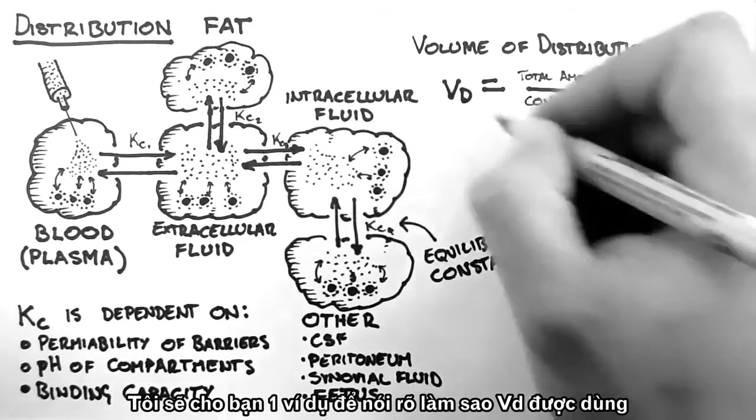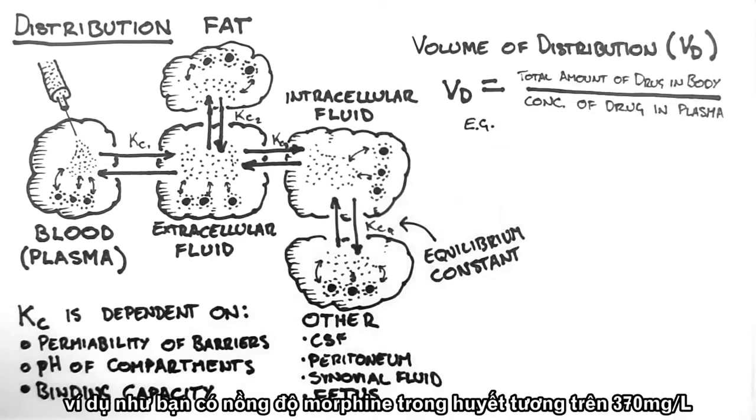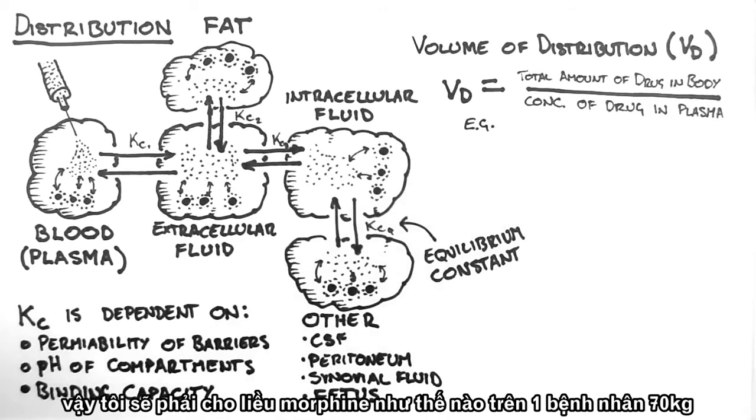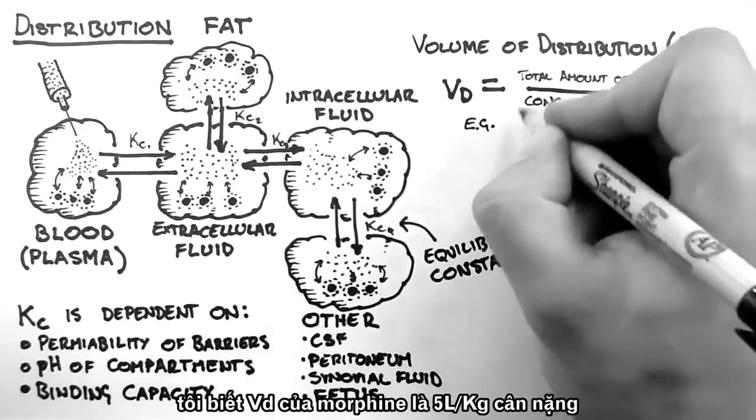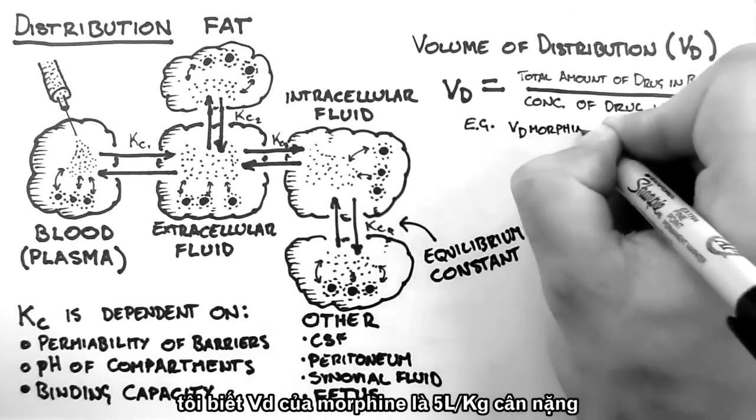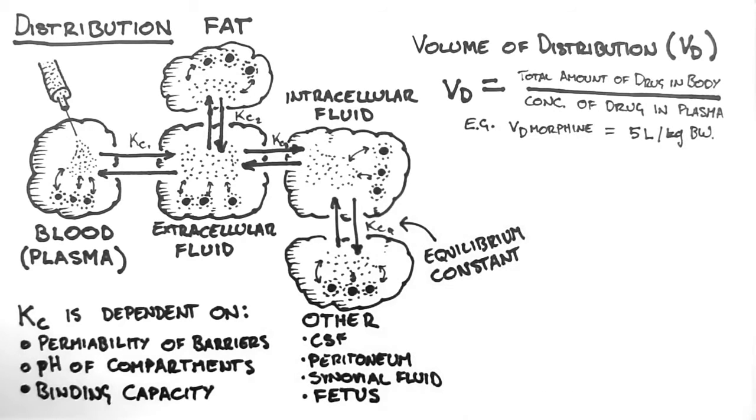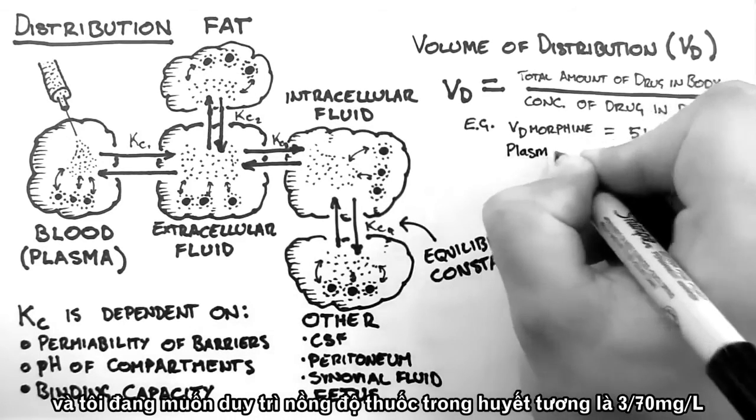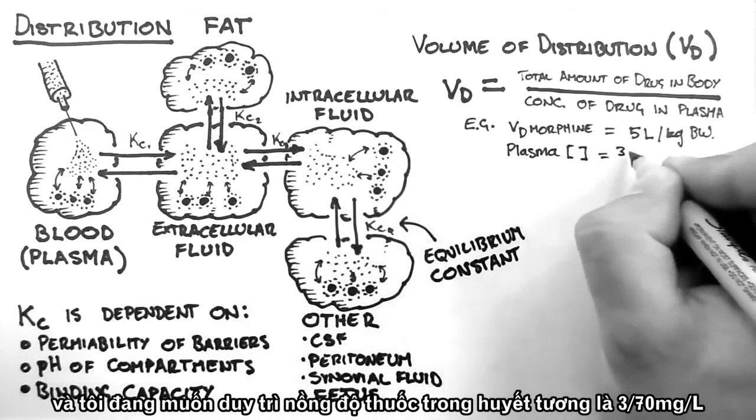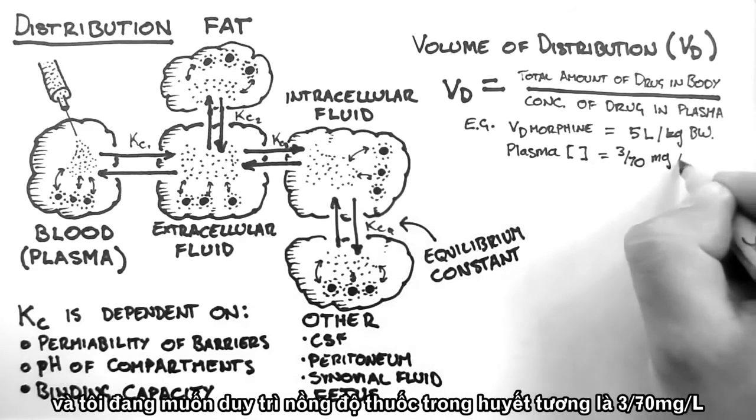I'll give you an example of how it might be used. Say I want to get a plasma concentration of morphine of 3/70th of a milligram per litre. How much morphine do I have to give a 70 kilogram patient? I know that the volume of distribution of morphine is about 5 litres per kilogram of body weight, and I'm trying to achieve a plasma concentration of 3/70th of a milligram per litre.